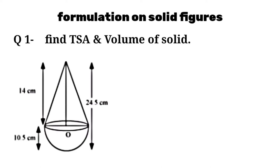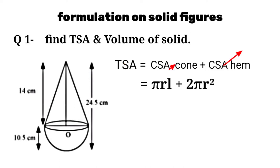A hemisphere is surmounted by a cone. So formulation for TSA equals CSA of cone plus CSA of hemisphere equals πrl plus 2πr².